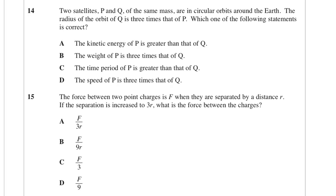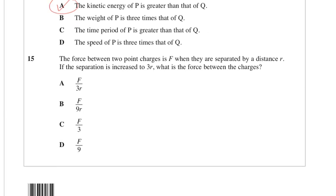Two satellites P and Q of the same mass are in circular orbits around the Earth. The radius of the orbit of Q is 3 times that of P. Which of the following statements is correct? Kinetic energy of P is greater than that of Q. Yes, that's correct, because if you're closer you have to be travelling faster, so we can get that one straight away.